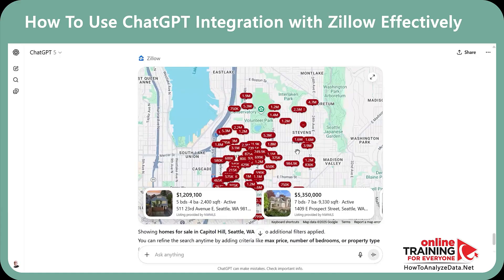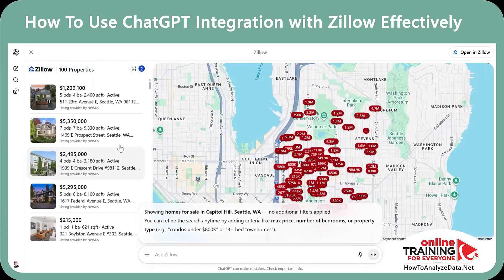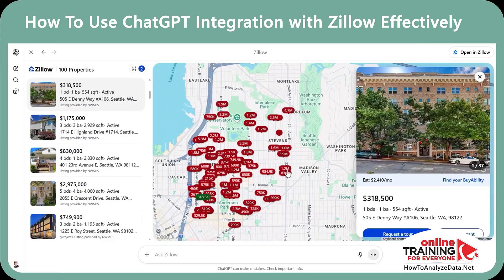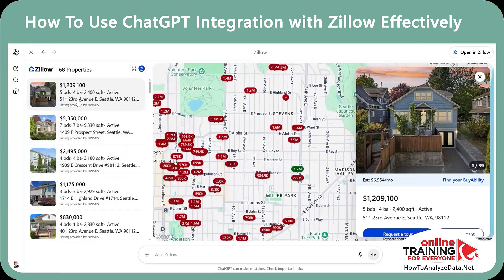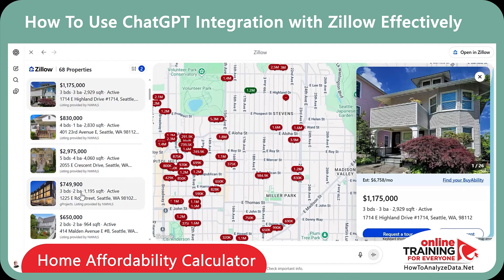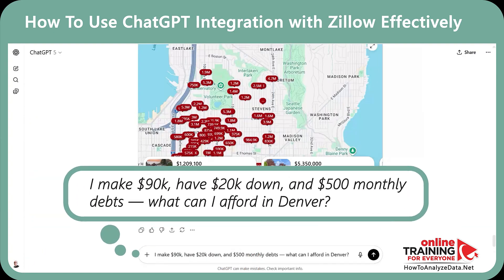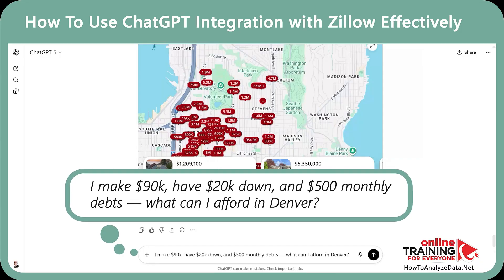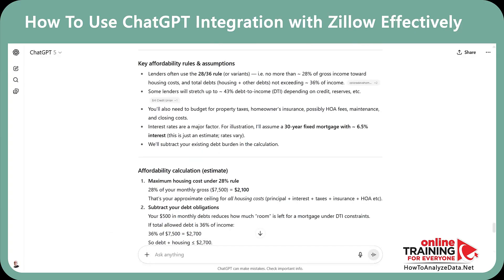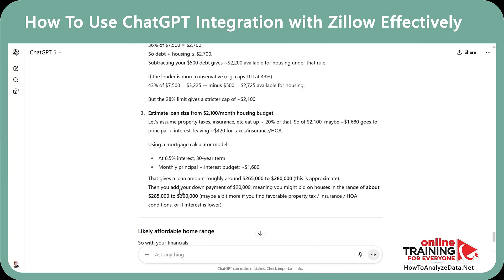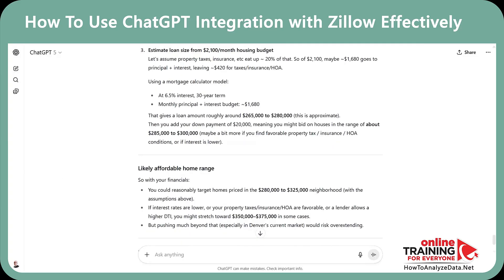Before I fall in love with listings, I need to check what I can afford. I'll provide income, down payment, debts, and city to get a target price range. Prompt: I make $90k, have $20k down, and $500 monthly debts — what can I afford in Denver? ChatGPT generates key affordability rules, assumptions, and calculations, then rationalizes the logic and creates a likely affordable home range.